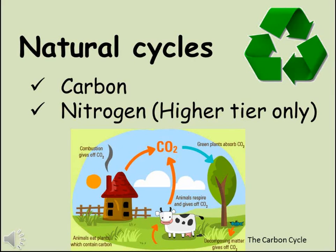Four elements make up around 95% of the mass of most living things: carbon, nitrogen, oxygen and hydrogen. This video will look at two of these elements, carbon and nitrogen, and how they are recycled through natural cycles between living and non-living components of the environment. The section on carbon is required for both higher and foundation tier exam papers, whereas the nitrogen cycle part is only needed if you are taking the higher tier B1 exam.